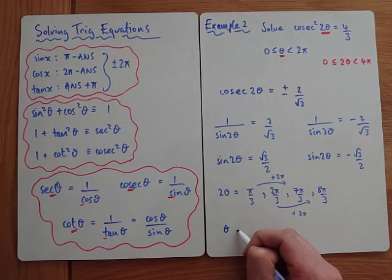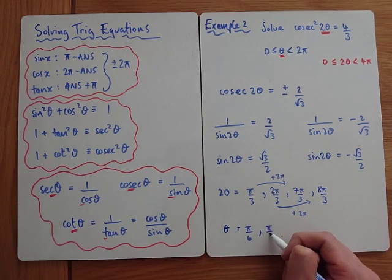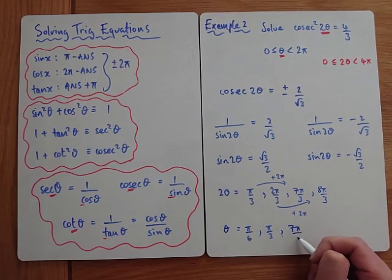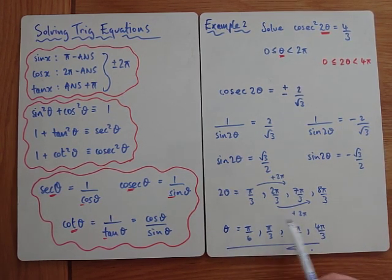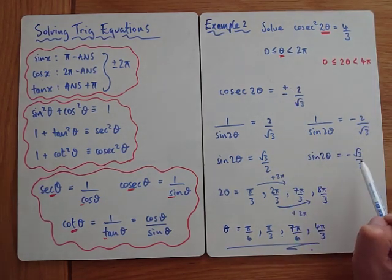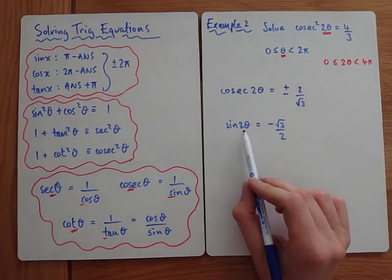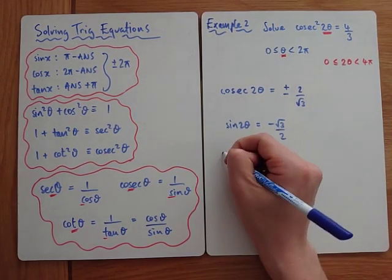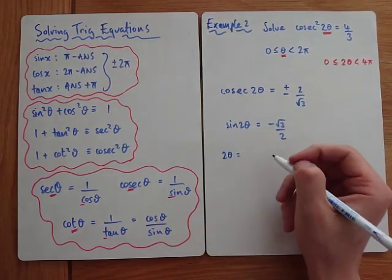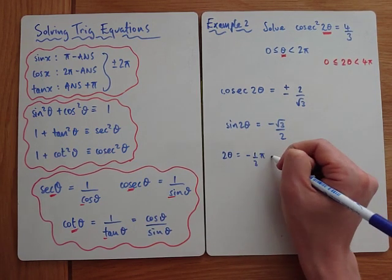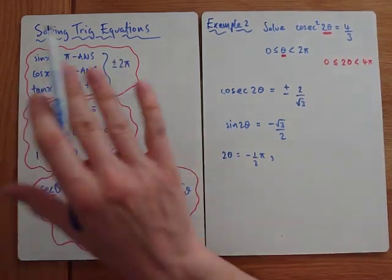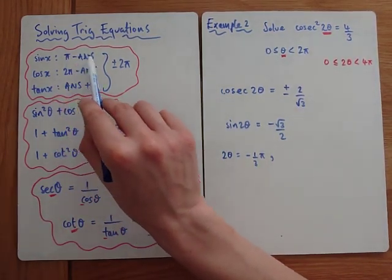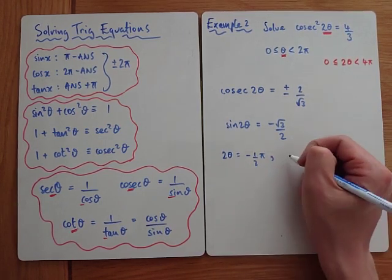Once you have all answers between 0 and 4π for 2θ, divide by 2. So θ equals π/6, π/3, 7π/6, and 4π/3. Unfortunately many people only get those four answers because they forgot the plus and minus. We also need to solve the negative case: sine 2θ equals minus root 3 over 2. Taking sine inverse gives a first answer of minus π/3.